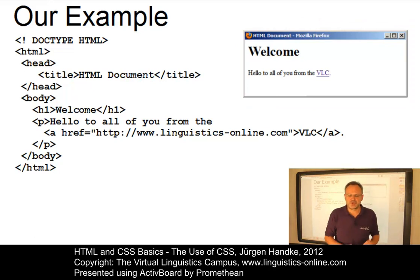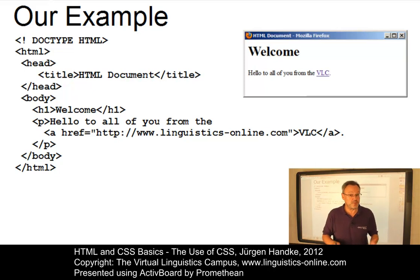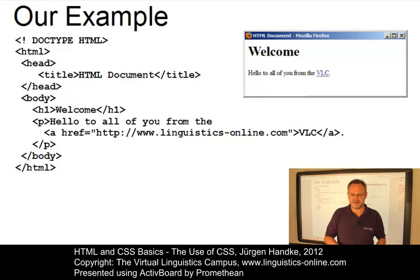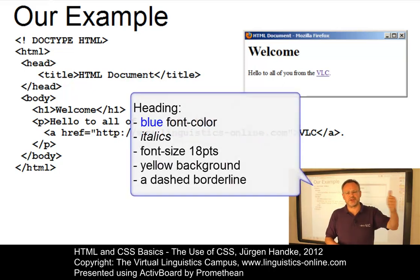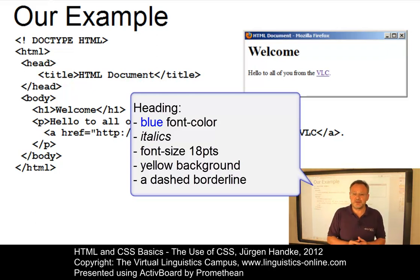Let us now focus on some basic ideas associated with the use of cascading style sheets. The most important benefit of using CSS is a drastic simplification of web authoring and web maintenance. Let us illustrate this using our heading tag. Assume you want to have a very special heading displayed in blue, displayed in italics, 18 points in size with a yellow background and maybe a dashed borderline around it.